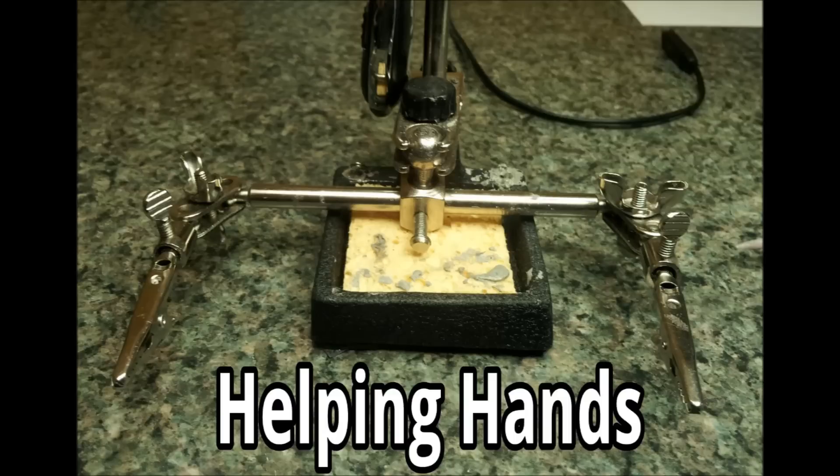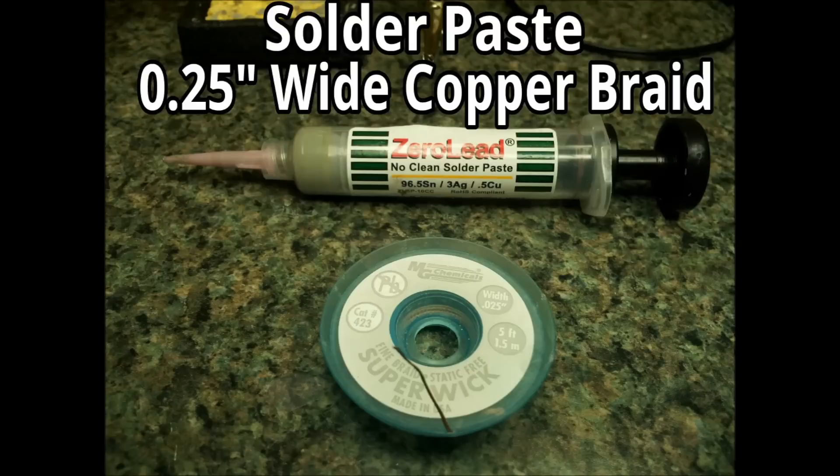You're going to need your helping hands or something similar to hold the board while you're working on it. You're also going to need solder paste as well as some copper braid. We're going to use that to get the solder off of the board. The width of this is going to depend on the phone you're working on, but this works for most devices.